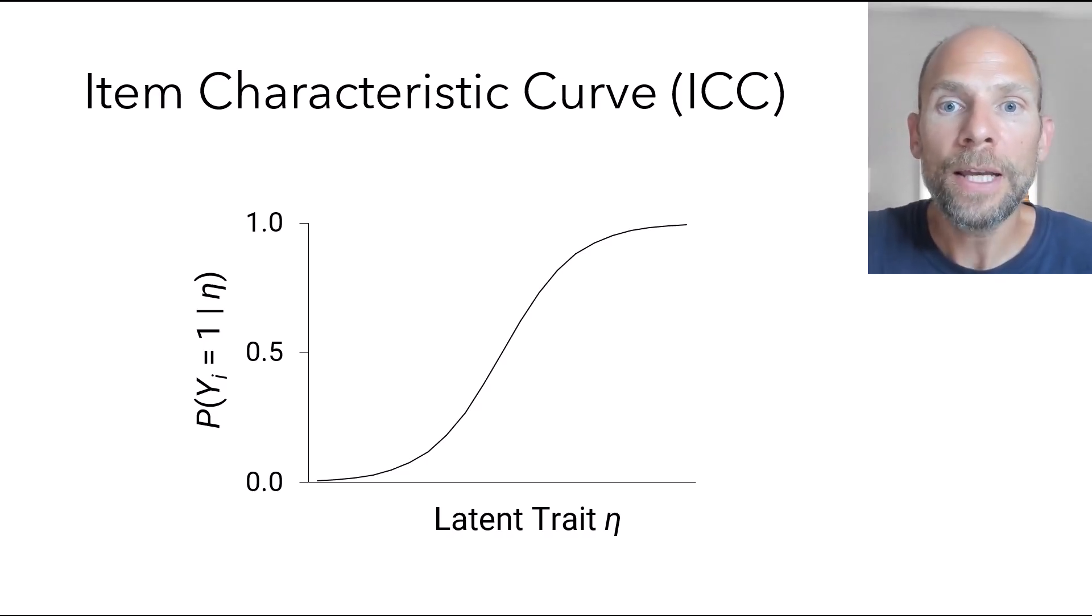So why do we use this S-shaped curve? First of all, this has the attractive property that the function will not exceed a probability of 1 and it will also not go below a probability of 0. So for a very low ability, you still have a probability that is above 0, even though it may be very small and very close to 0. For individuals with very low abilities, they may have a very small chance of solving a specific test item. However, it will not be negative, which wouldn't make sense.